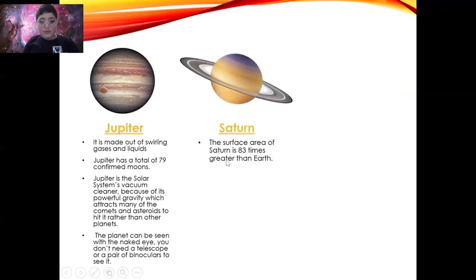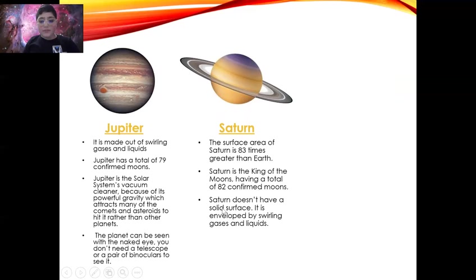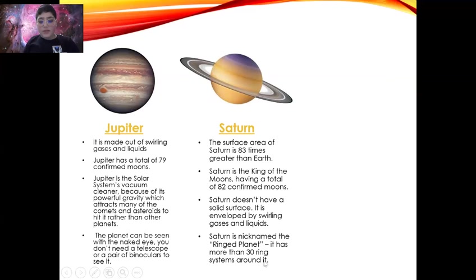Saturn. The surface area of Saturn is 83 times greater than Earth. Saturn is the king of moons, having a total of 82 confirmed moons. Saturn doesn't have a solid surface; it is enveloped by swirling gases and liquids. Saturn is nicknamed the ringed planet and has more than 30 ring systems around it.